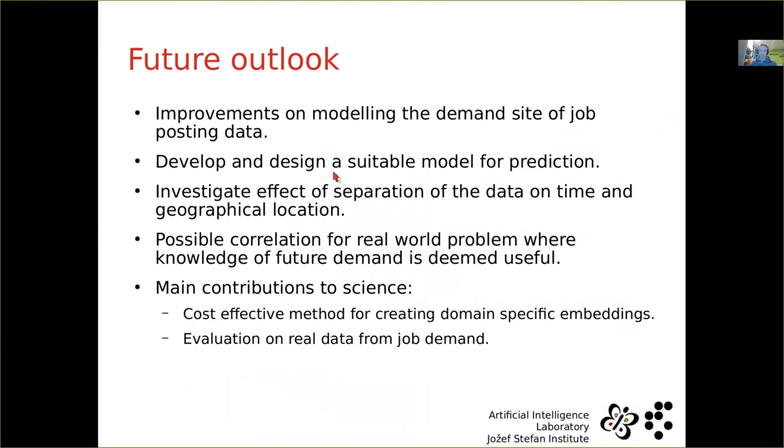In order for future outlooks, we want to improve modeling and demand side of job posting setup. We want to develop and design a suitable model for prediction. And we want to investigate the effect of separation of the data on time or geographical location. So for example, if the data only in Germany would create a better model, than if we know everything. Then we want to observe possible correlation from real-world problems, where knowing demand in future is deemed useful. But overall, main contribution to science are, we can separate the contribution to science to cost-effective methods for creating domain-specific embedding, evaluation on real data from job demand, and possible model that we are still to create.